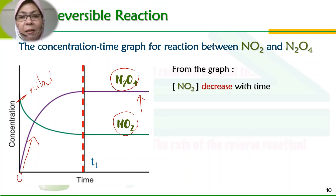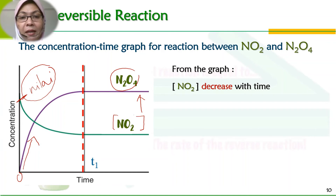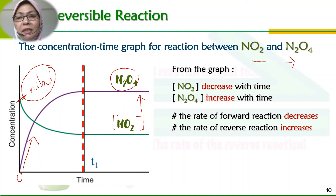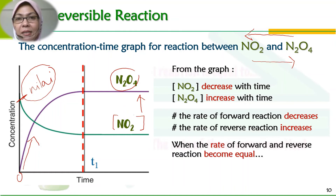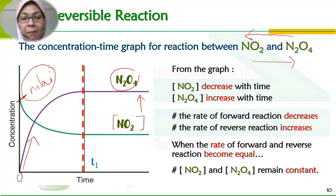From the graph, concentration NO2 decrease with time — kepekatan ini berkurangan dengan masa sebab kita mula dengan dia, semakin lama dia semakin kurang kerana dia menjadi N2O4. Dan N2O4 pula semakin lama semakin banyak, jadi kepekatan N2O4 akan increase dengan masa. The rate of forward reaction akan berkurang — maksudnya daripada NO2 menjadi N2O4 semakin kurang — dan N2O4 menjadi NO2, reverse reaction, akan semakin bertambah. Apabila kadar tindak balas ke hadapan sama dengan kadar tindak balas ke belakang, concentration NO2 dan concentration N2O4 telah menjadi constant. Bukan menjadi sama — mereka constant, tidak berubah lagi.